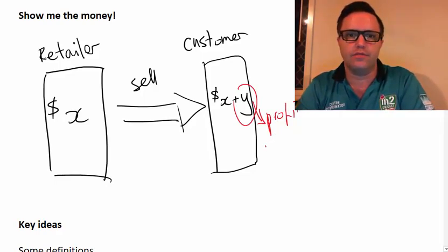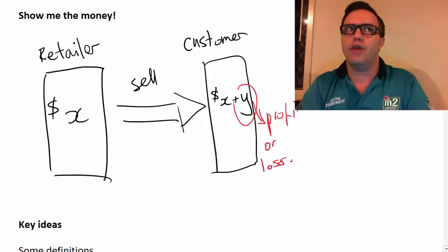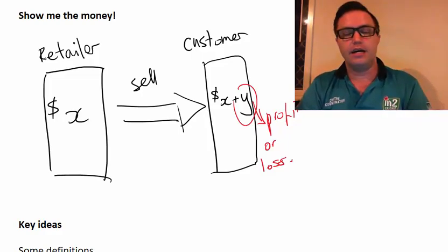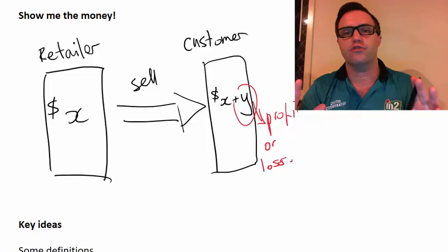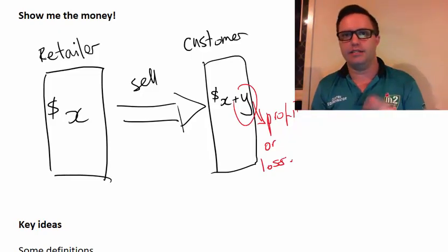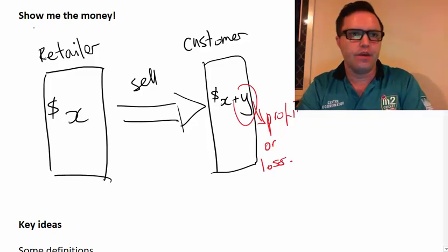And it can also be sometimes a loss, depending upon what it is, how much it's on special. Sometimes a business might make things super on special to make sure they sort of get rid of them. But most of the time, they're looking to try and sell with some kind of profit, so they end up with more money in the end than what they started with.